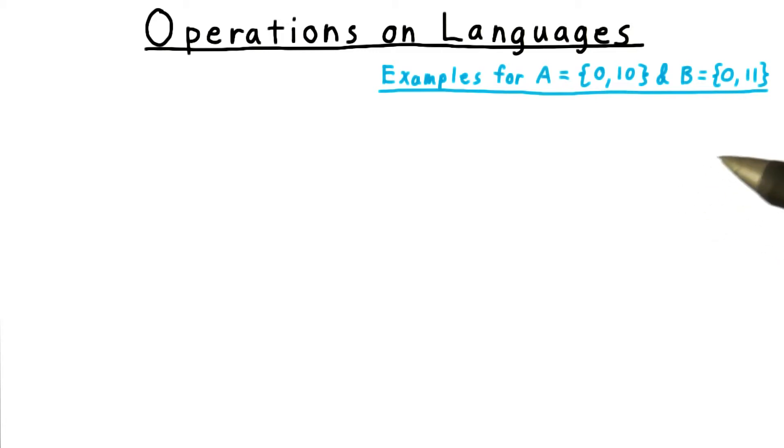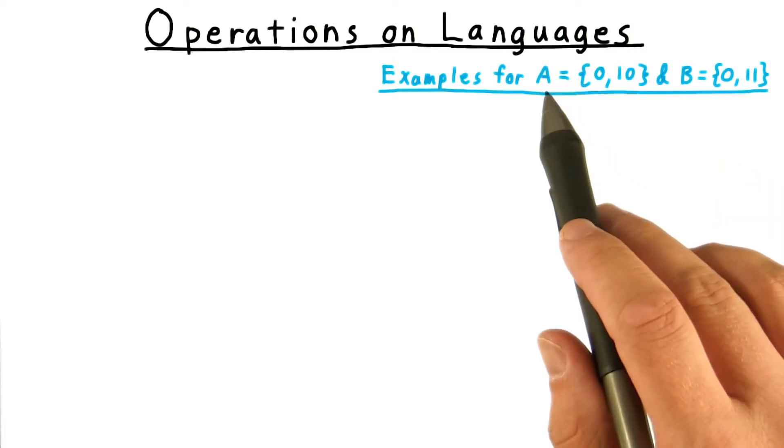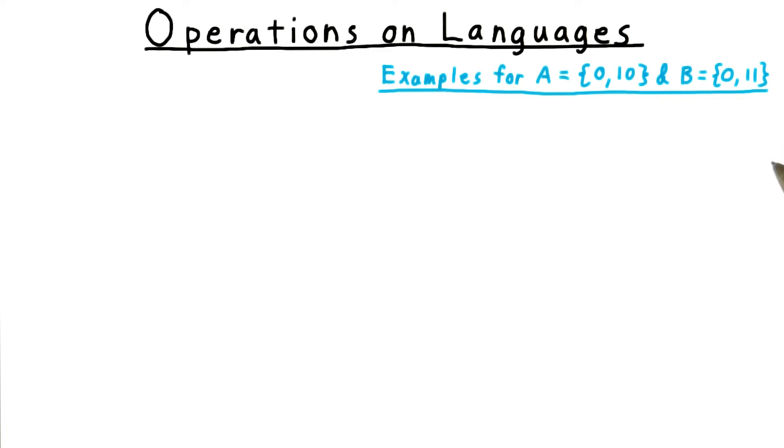In addition to defining the notion of a language itself, we want to define some operations on languages and establish some notation. We'll illustrate using these two languages over the 0, 1 alphabet.